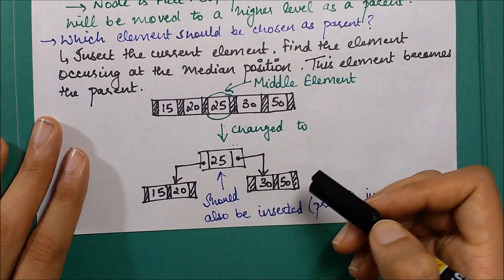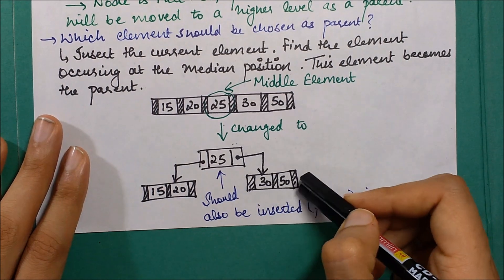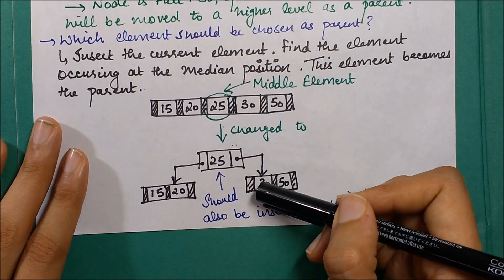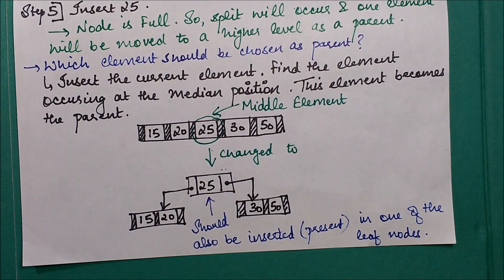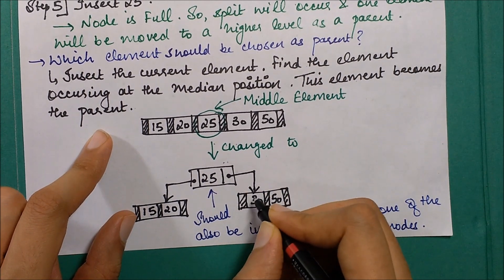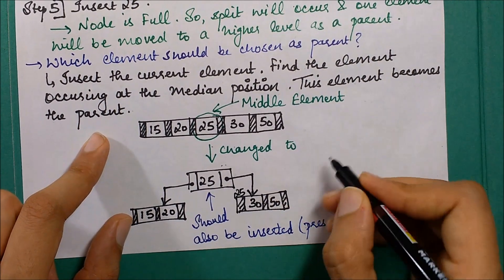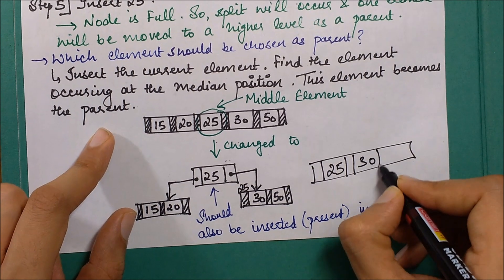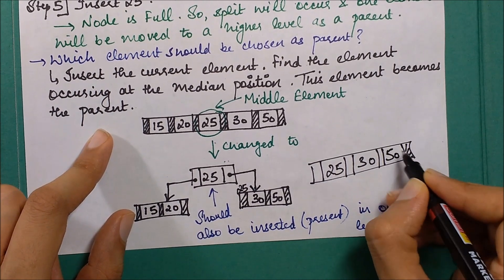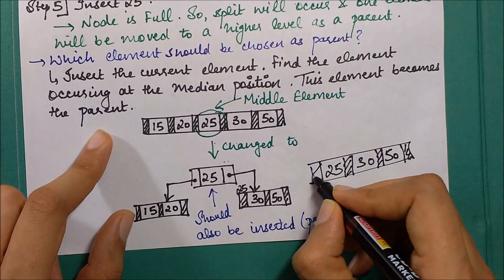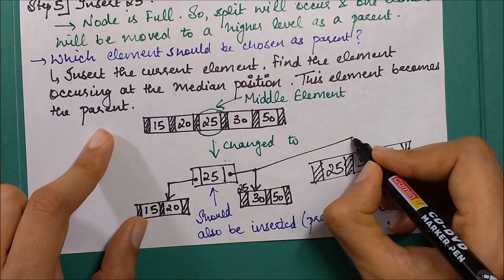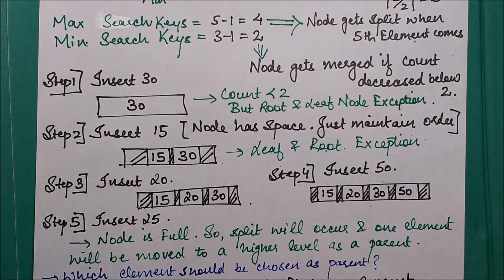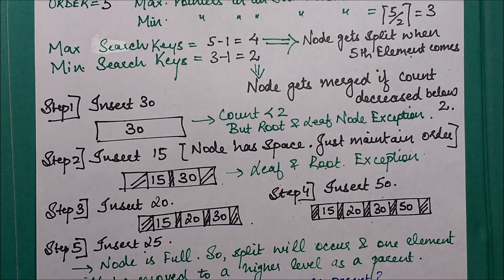We can write 25 in either the left or right branch. As discussed in the first video, right-hand side elements are greater than or equal to the parent. So 25 goes to the right child node, which becomes: 25, 30, 50 — with end pointers marked null since there are no new elements.